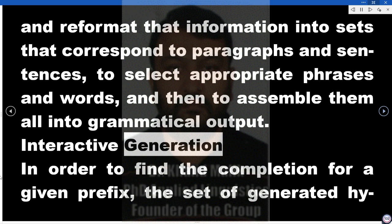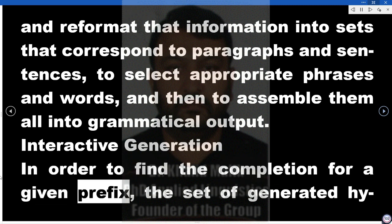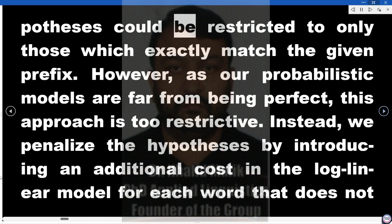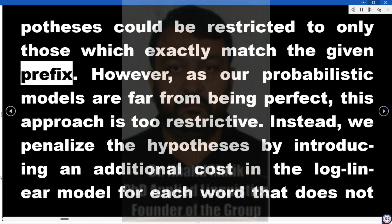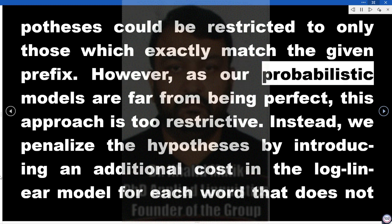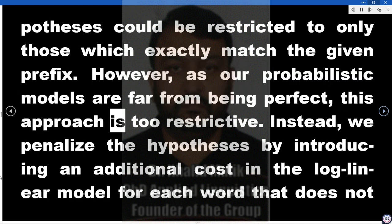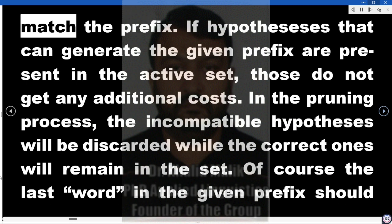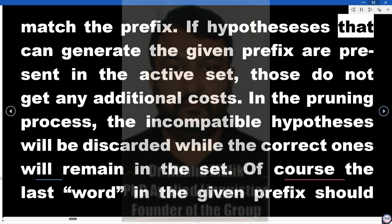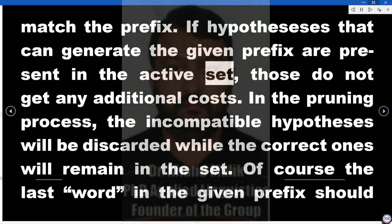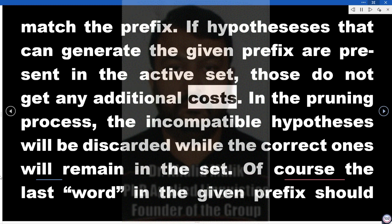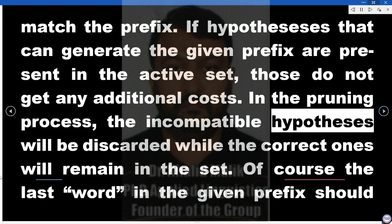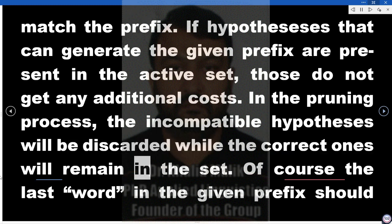Interactive Generation. In order to find the completion for a given prefix, the set of generated hypotheses could be restricted to only those which exactly match the given prefix. However, as our probabilistic models are far from being perfect, this approach is too restrictive. Instead, we penalize the hypotheses by introducing an additional cost in the log-linear model for each word that does not match the prefix. If hypotheses that can generate the given prefix are present in the active set, those do not get any additional costs. In the pruning process, the incompatible hypotheses will be discarded while the correct ones will remain in the set.